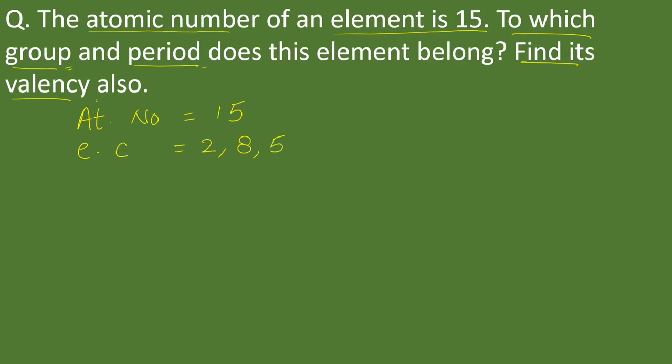Now first is group number. If valence electron is equal to 5, then group number is equal to 10 plus valence electron. This is the formula to calculate group number.